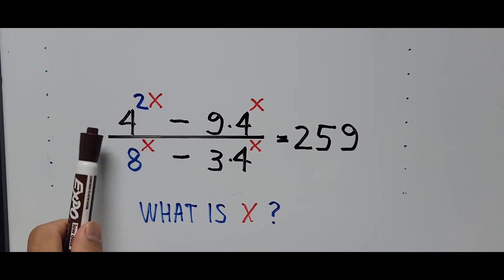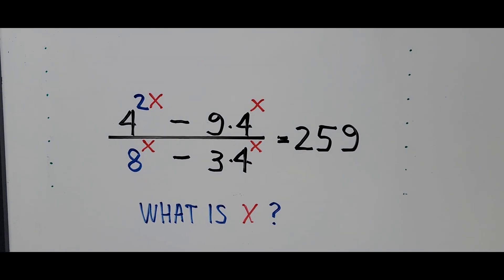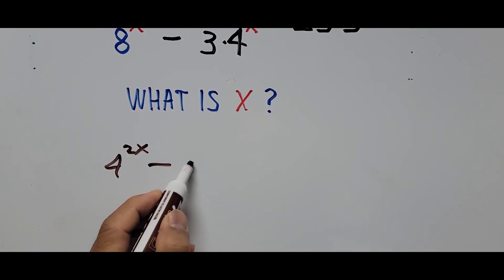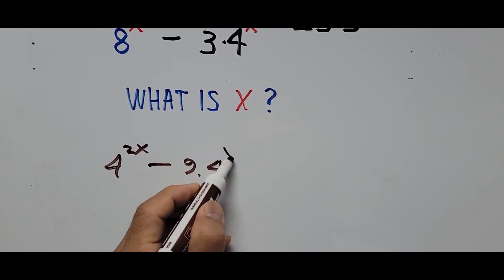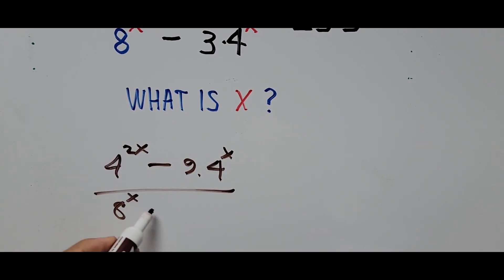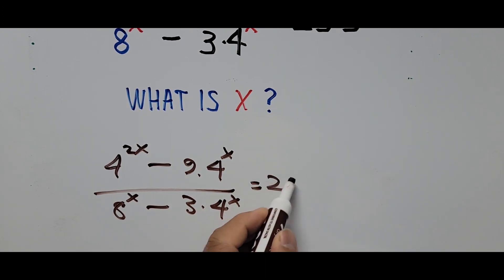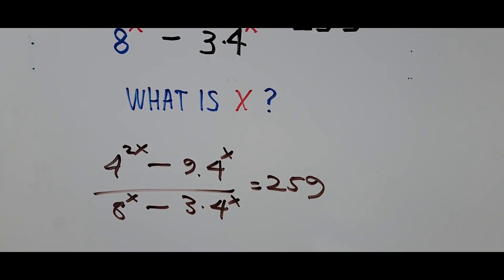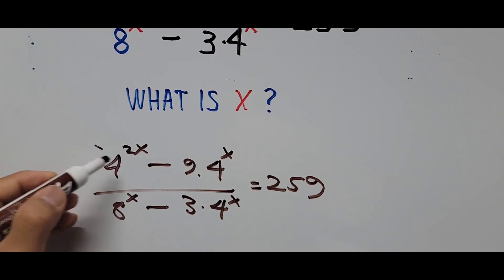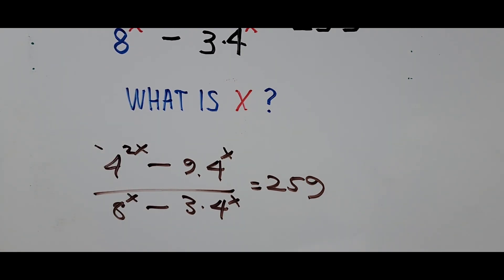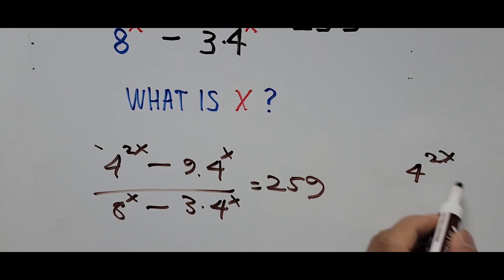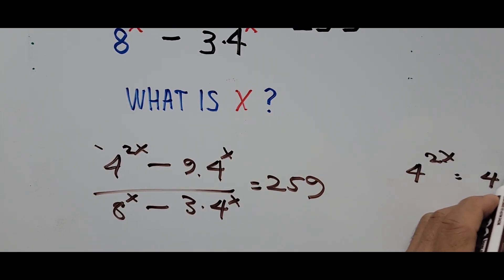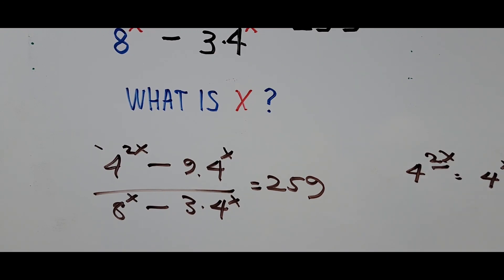This means that these terms can be split. So we rewrite the equation: 4 raised to 2x minus 9 times 4 raised to x, divided by 8 raised to x minus 3 times 4 raised to x, equals 259. We focus on 4 raised to 2x — that exponent 2 means 4 raised to 2x can be split.